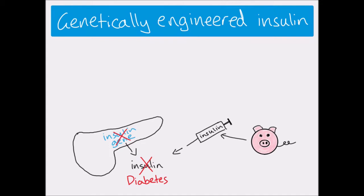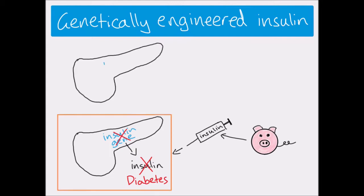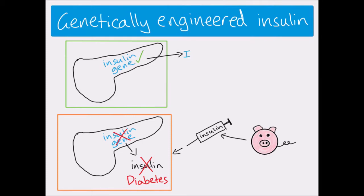This is where genetic engineering can be used. If we can find a person who has a working insulin gene — so their pancreas is producing insulin normally — we could take that gene for insulin from them and produce insulin using it. To do this we'd first have to extract the gene somehow, then make lots of copies of it (cloning the gene), and then try to insert it into a host cell.